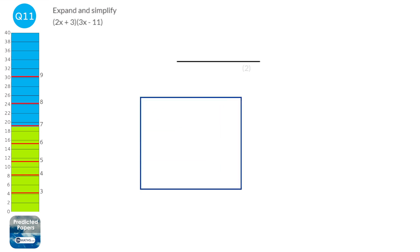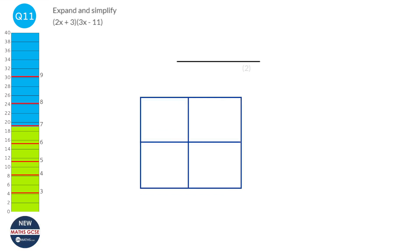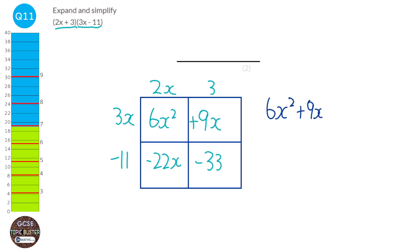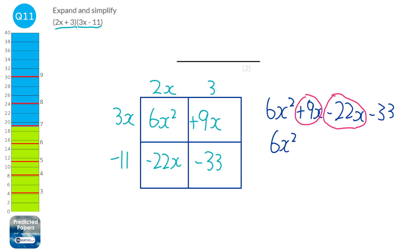Using a multiplication grid to expand (2x + 3)(3x − 11): put 2x and plus 3 at the top, 3x and minus 11 down the side. Multiplying out: 6x squared, 9x, minus 22x, and minus 33. Collecting like terms, 9x and minus 22x combine to make minus 13x. So the answer is 6x squared minus 13x minus 33.